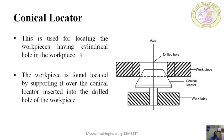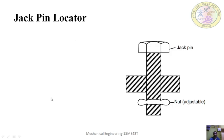The conical locator is used for locating workpieces having a cylindrical hole. The workpiece is located by supporting it over the conical locator and inserting it into the drilled hole of the workpiece. If there is an already drilled hole of a different diameter, the conical locator will fit into that hole provided in the workpiece.